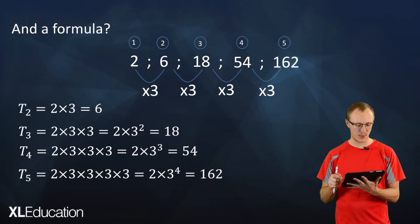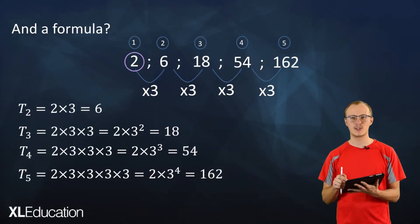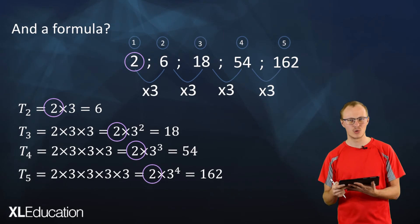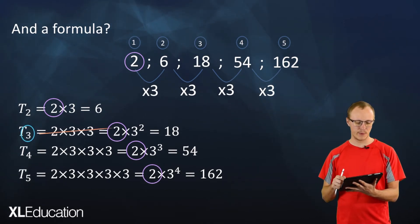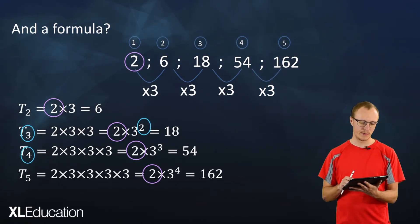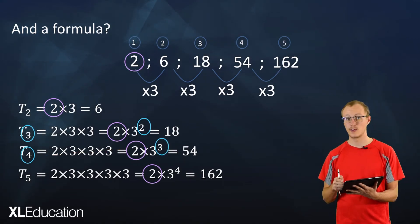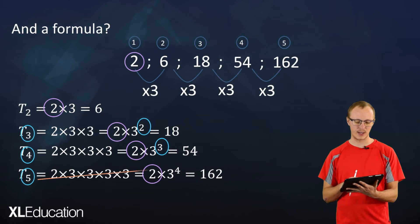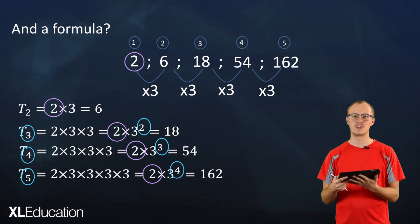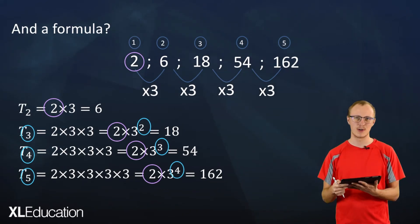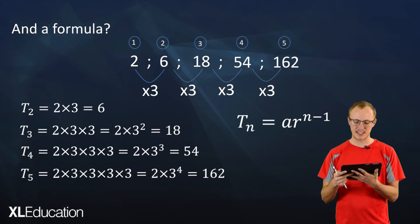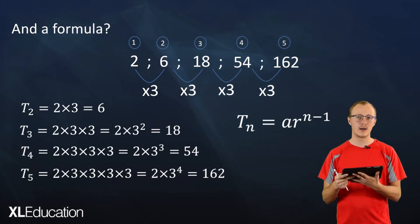Now is there a pattern hiding here? We see we start with the number 2, and we're always multiplying 2 by something. For the third term we take our ratio 3 and raise it to the power of 2. For the fourth term we raise 3 to the power of 3. For our fifth term we raise 3 to the power of 4. So the power to which we raise the ratio is always one less than the position of the term.